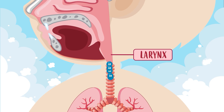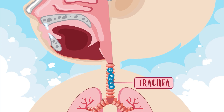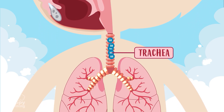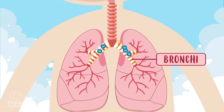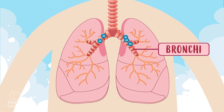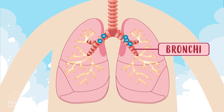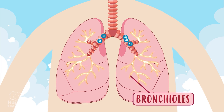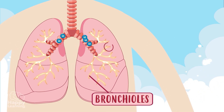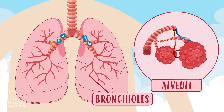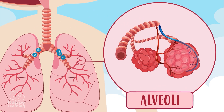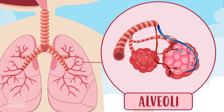Once the air has passed through the larynx, it reaches the trachea. The trachea is divided into two tubes through which the air passes, which are called the bronchi. The bronchi, once inside the lungs, branch into narrower tubes called bronchioles. And each bronchiole leads into many small sacs called alveoli. And it is there, in the alveoli, where gas exchange takes place.